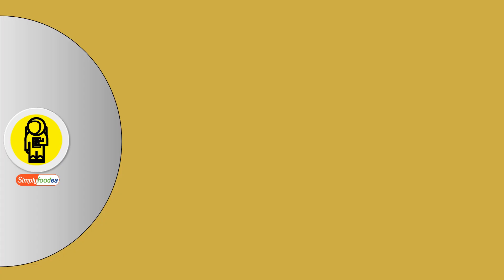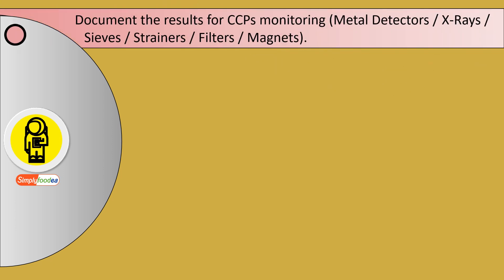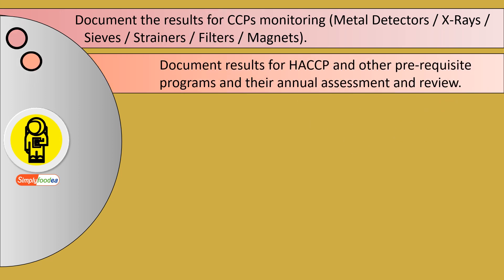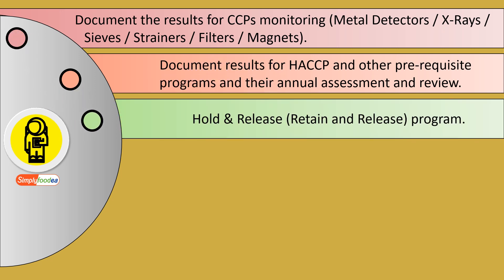Food safety professionals are also responsible for documenting the results for CCPs — critical control points — monitoring, such as metal detectors, X-rays, sieves, strainers, filters, and magnets. They are also responsible for documenting results for HACCP — hazard analysis and critical control points — and other prerequisite programs, their annual assessment and review, and the hold and release program, also known as the retain and release program.